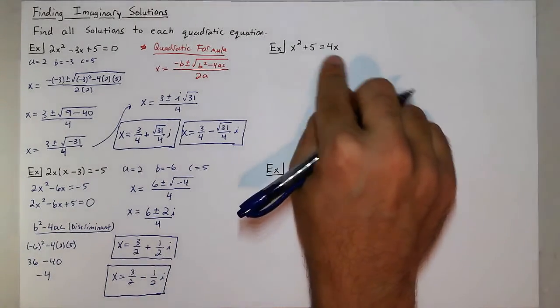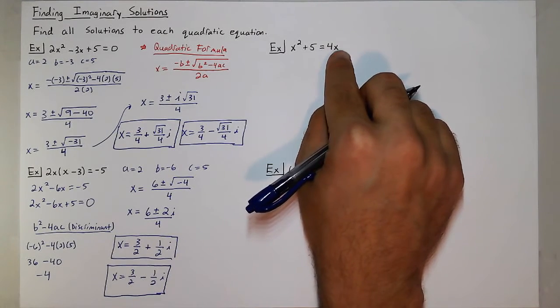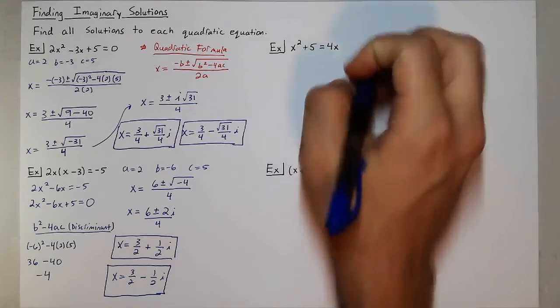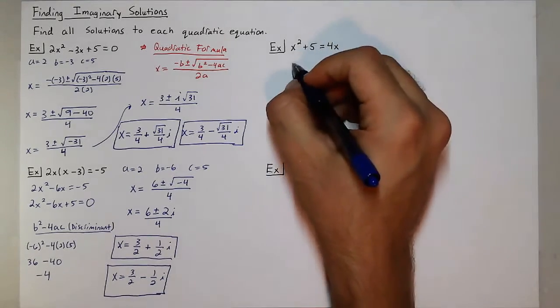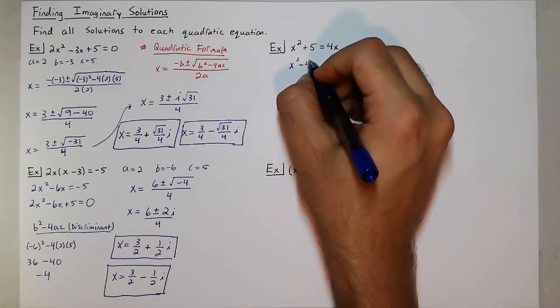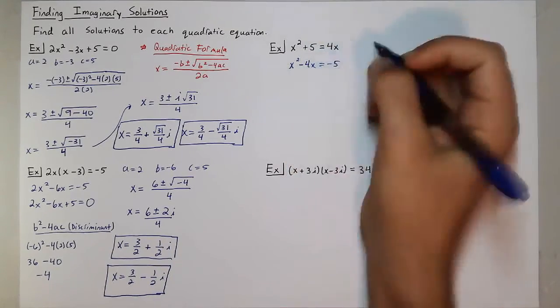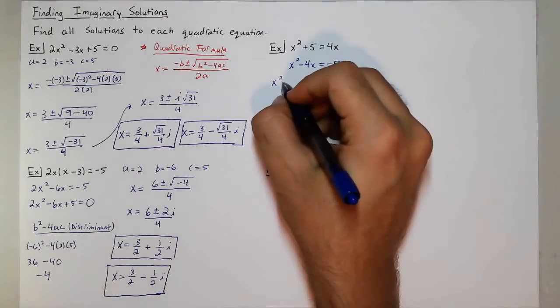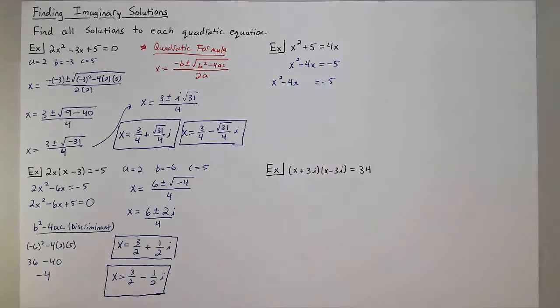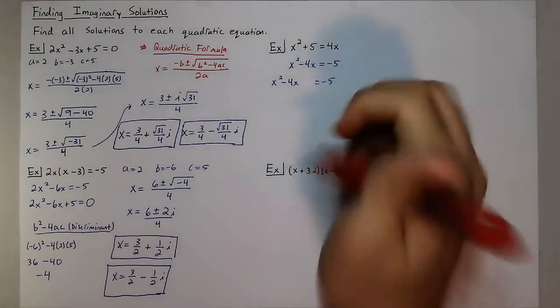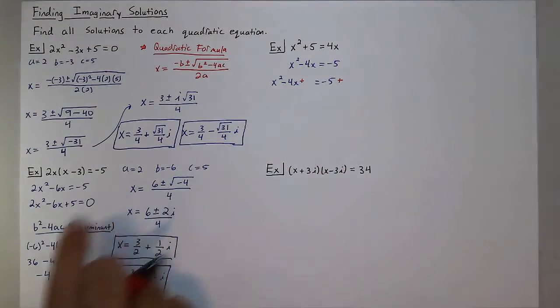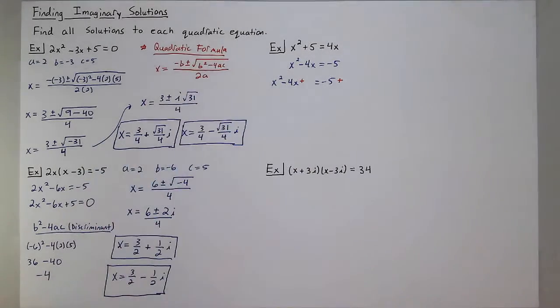Now, this next example is actually in a pretty good position for us to solve this using completing the square. And what I mean by that is, if I move the 4x over to the left and the 5 over to the right, I get x² - 4x = -5. And if I complete the square on the left, then I can use a different technique. It's usually a bit faster and usually there's less room for mistakes than trying to use the quadratic formula every time.